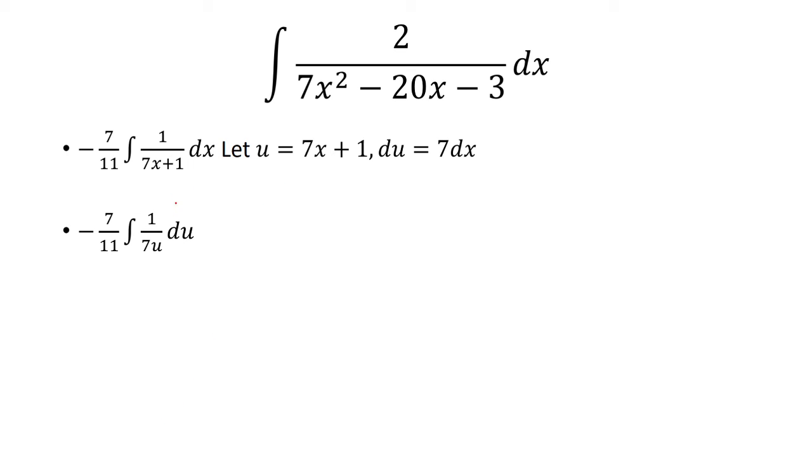Now I'm going to replace the denominator with u. But because du is 7 dx, that means that dx is du over 7. So that's why I put the 7 down here. And now these two 7s are going to get cancelled. So I'm going to be left with negative 1 over 11. And then the integral of 1 over u du is just ln of u.